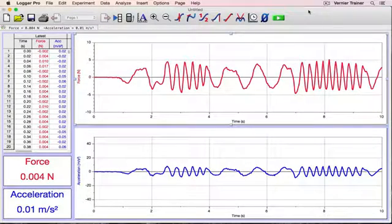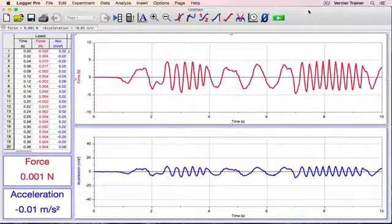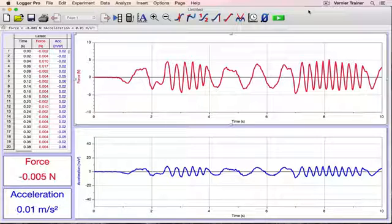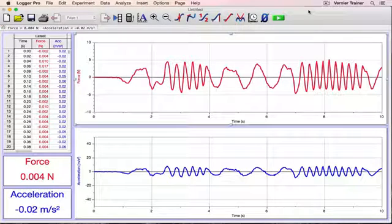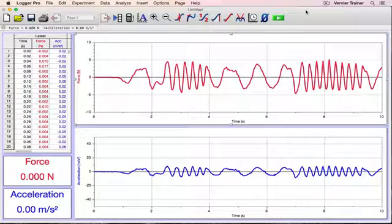Newton's Second Law is a relationship between force and acceleration. By default, Logger Pro has recorded these quantities with respect to time. But since I have data for both recorded simultaneously, I can choose to plot force versus acceleration.